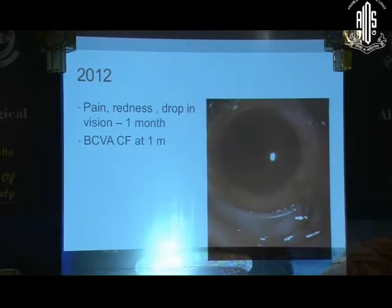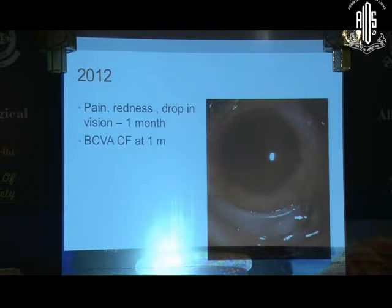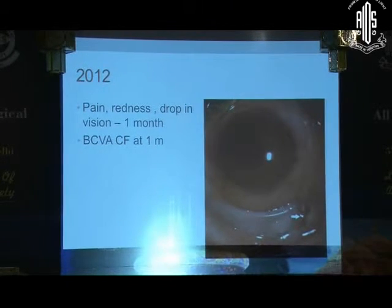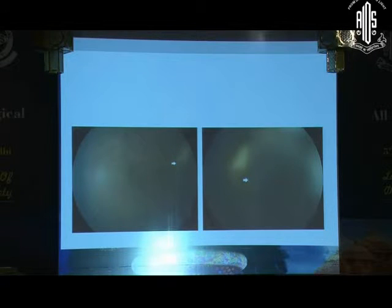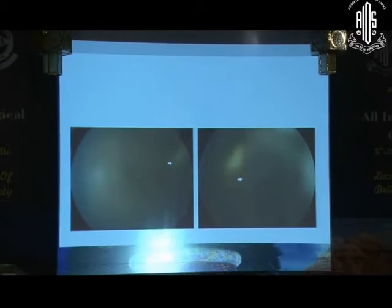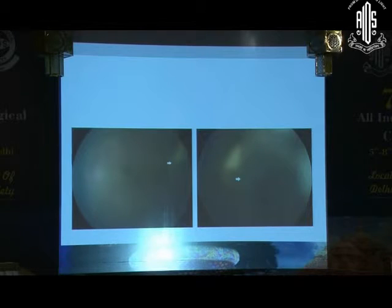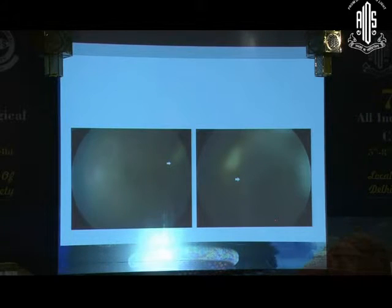She came to us in 2012 complaining of pain, redness, and a drop in vision of one month. Her visual acuity at this time was counting fingers at one meter. You can see the buckle and suture exposure inferiorly. The fundus showed a very hazy vitreous with some exudates temporal to the macula. You can faintly see the subretinal demarcation line through the fovea; the retina was attached.